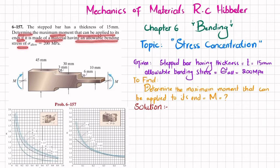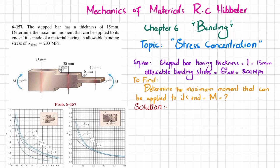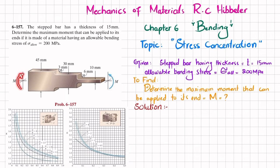The material has an allowable bending stress of 200 megapascals. The step bar has a thickness of 45 mm on one end, 30 mm in the middle, and 10 mm on the smaller end, with a fillet of 3 mm at one step and a fillet of 6 mm at the other. Moment M is applied at its end. We need to find the maximum moment that can be applied.